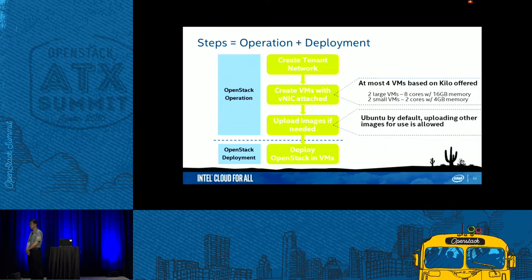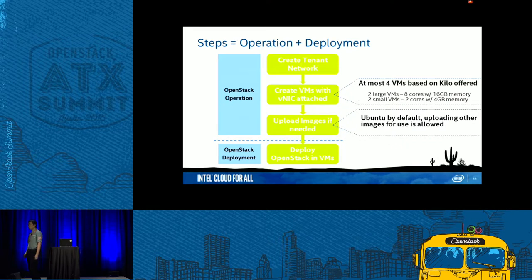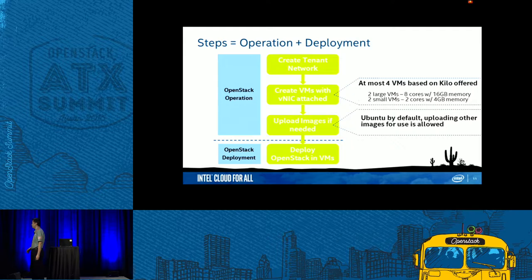The ideal deployment steps for students were: get the virtual machines, create a tenant network to connect all virtual machines to each other, create virtual NICs and attach them to the virtual machines, upload their own images or use the images we offered to Glance service, and then deploy OpenStack based on the tenant network.